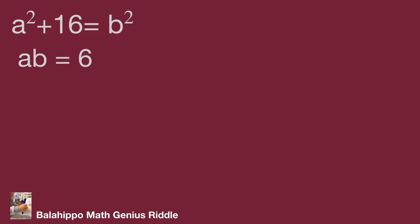We have two given equations: a² + 16 = b² and ab = 6. I'm going to use the equation ab = 6. Divide both sides by a, then we get b = 6/a.